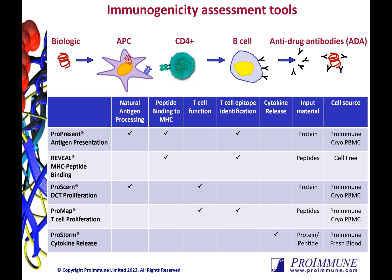Proimmune's integrated approach allows you to select the most appropriate assay to evaluate your therapeutic, saving you time, money, and overall project risk. The majority of these tools utilize cryopreserved PBMCs from our cohort of healthy donors who have been fully typed for Class 2. We use a broad panel of 10 to 50 donors for each study to best fit the global population, ensuring a diverse scope of HLAs are represented.